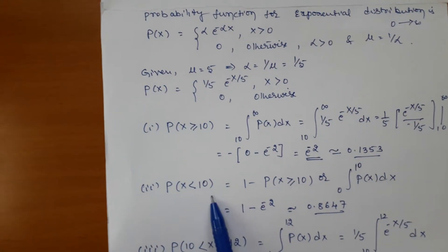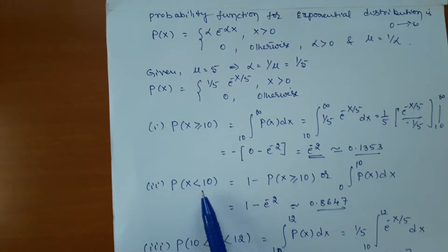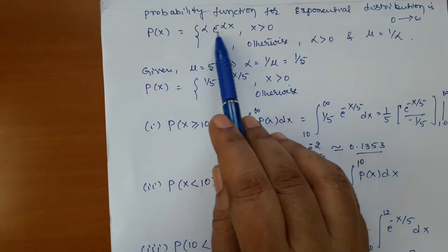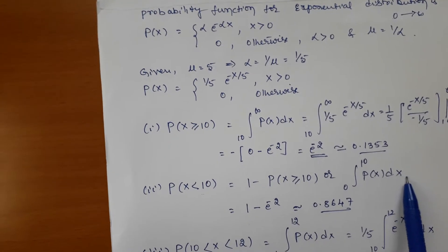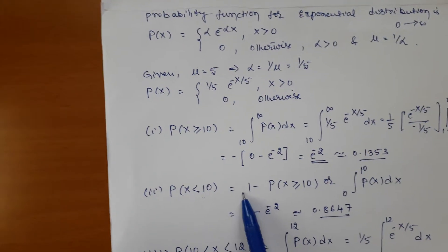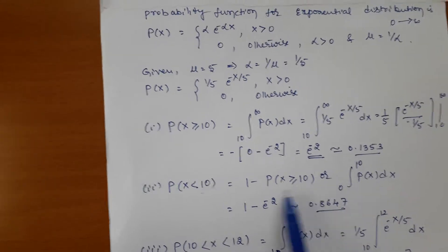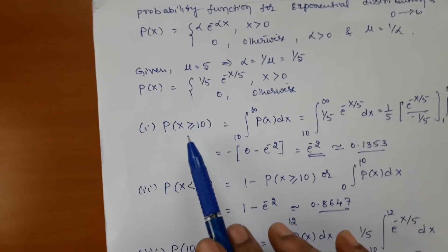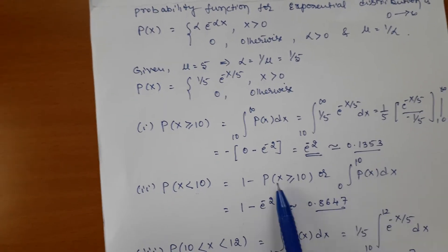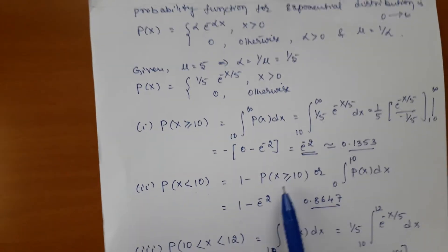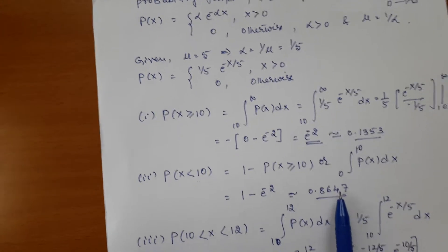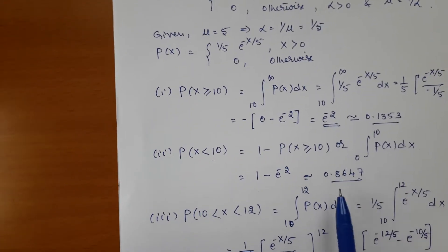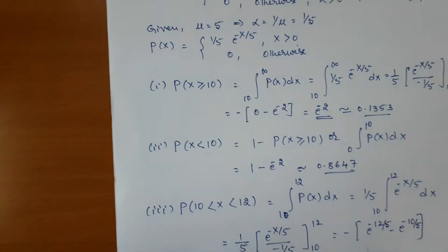Case 2: Find P(X < 10). Instead of integrating from 0 to 10 directly, we use the complement: P(X < 10) = 1 − P(X ≥ 10). Since we already calculated P(X ≥ 10) = e^(−2), we substitute: 1 − e^(−2), which gives approximately 0.8647.